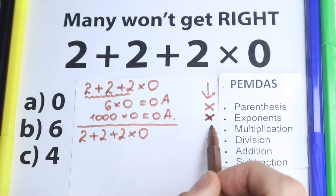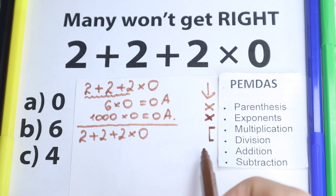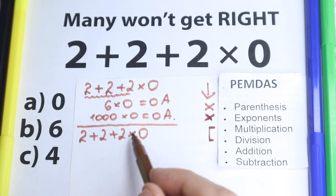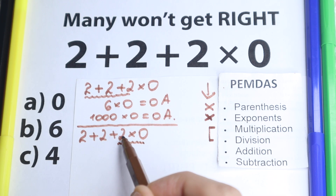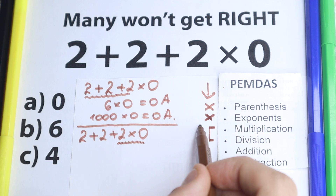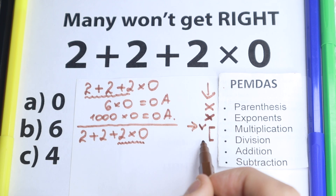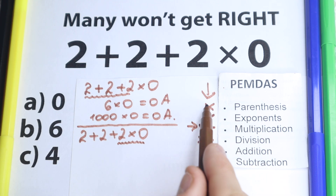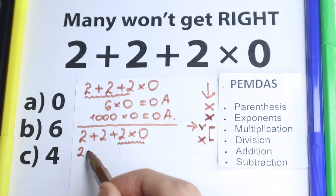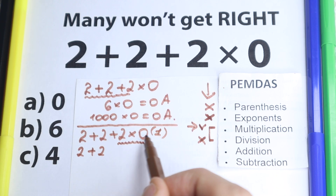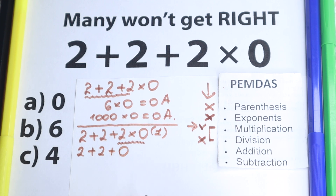Now we scan for multiplication or division signs. We have addition, addition, and then multiplication at the end — and that multiplication applies to these two numbers: 2 and 0. This is the key moment. So our first step is to multiply: 2 times 0 equals 0. We've completed the multiplication step.